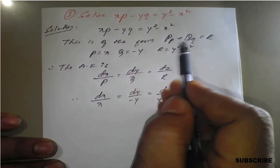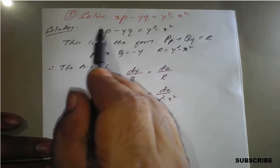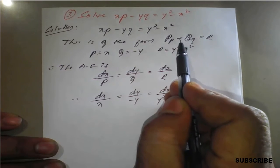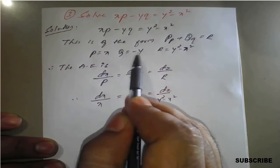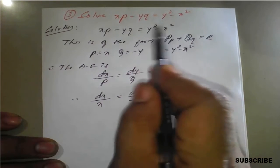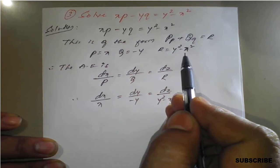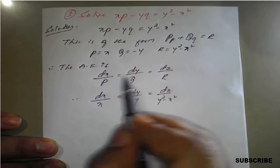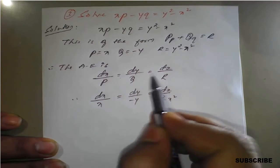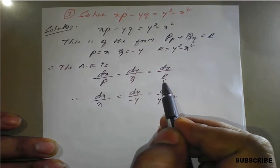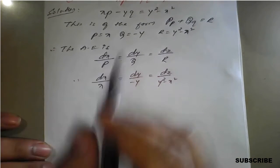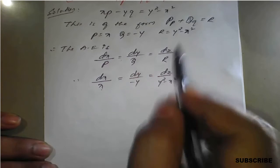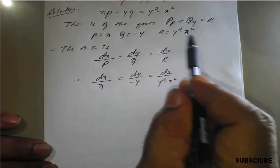The given question is of the form Pp + Qq = R, where P is x, Q is minus y (minus because the standard formula has a plus, so it is -y), and the right-hand side, capital R, is y² - x². Therefore, the auxiliary equation is dx/P = dy/Q = dz/R, that is dx/x = dy/(-y) = dz/(y² - x²).